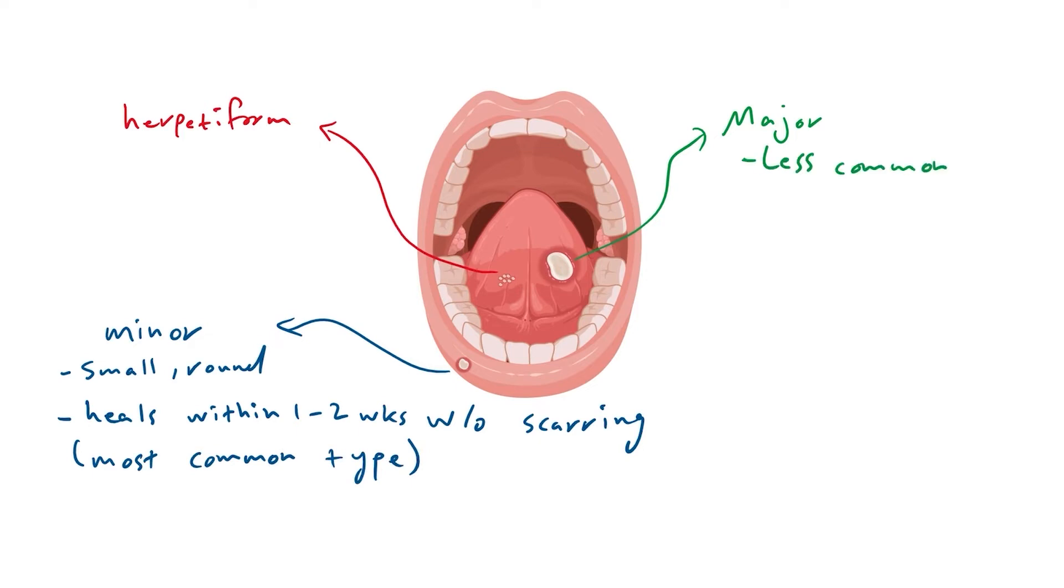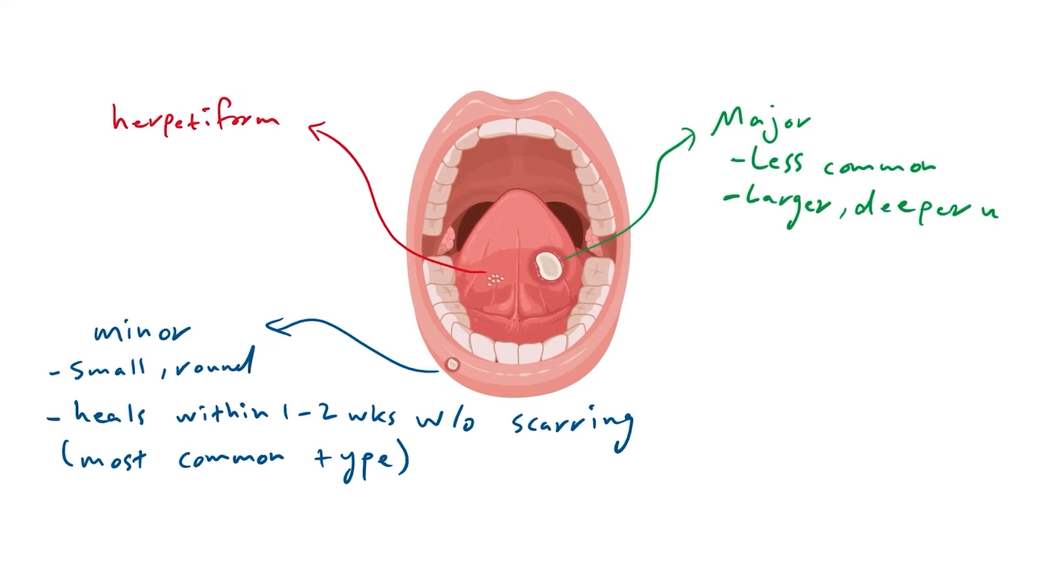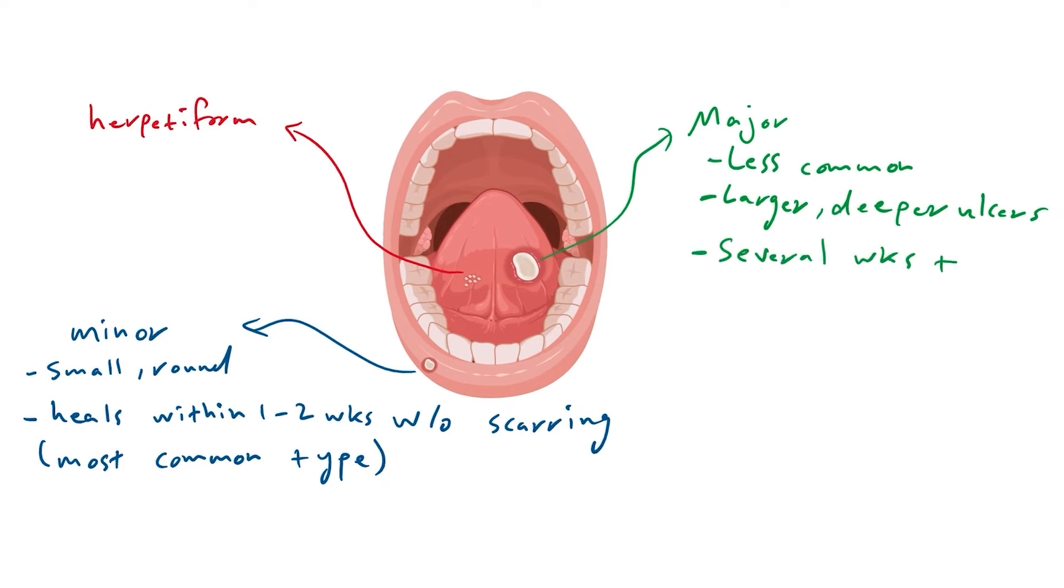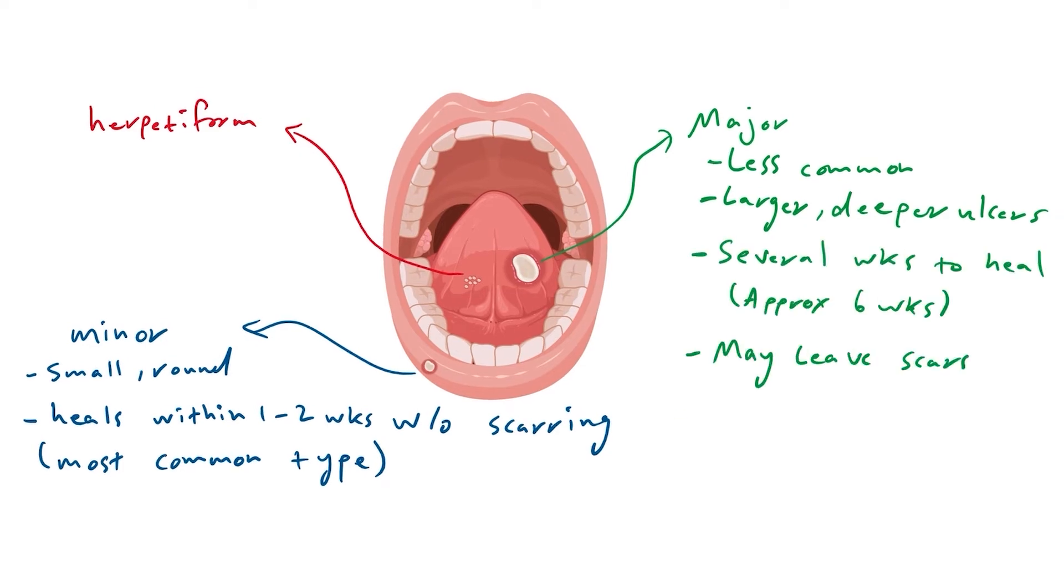Major RAS is less common and can result in larger, deeper ulcers that can take several weeks to heal and may leave scars. They are greater than 10 mm in diameter and are commonly found in patients with HIV.